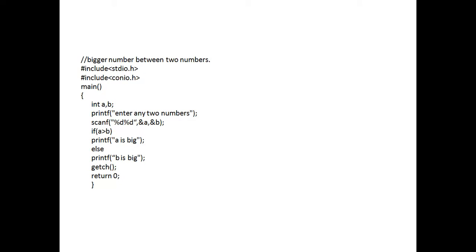printf 'enter any two numbers', then scanf with %d %d and &a, &b — this is the terminology you have to use for the scanf function. The logic: if a is greater than b, printf 'a is big', else printf 'b is big', then getch and return zero. getch is used to wait on the output screen. That is a small program using the if statement.